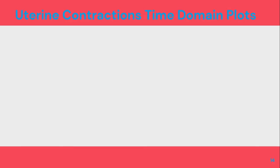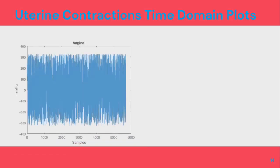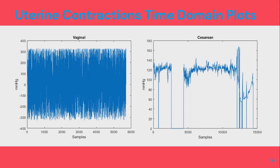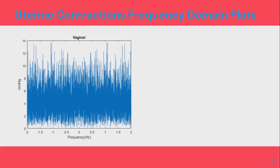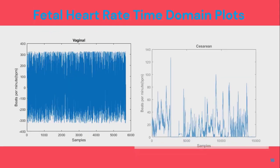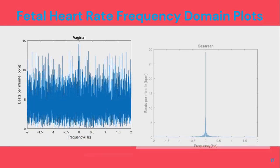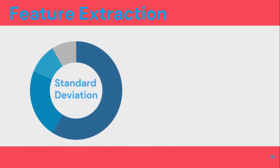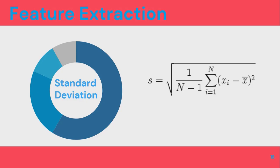The next step is feature extraction. I will first show the time-domain and frequency-domain plots of the raw acquired signal, including uterine contraction signals and fetal heart rate signals for both vaginal and caesarean deliveries. After various experimentation, standard deviation was found to be the best feature. Standard deviation is a measure of variability — an estimate of the variability of the population from which the respective samples are drawn — and it was the best feature for both categories: fetal heart rate and uterine contractions.